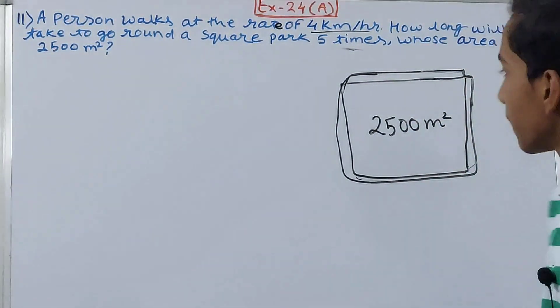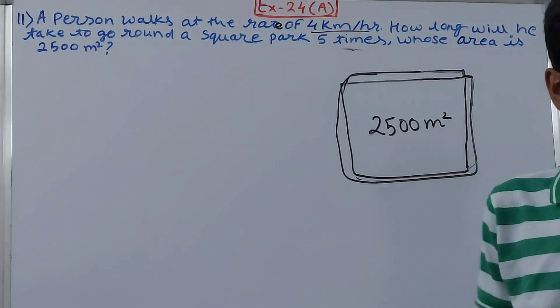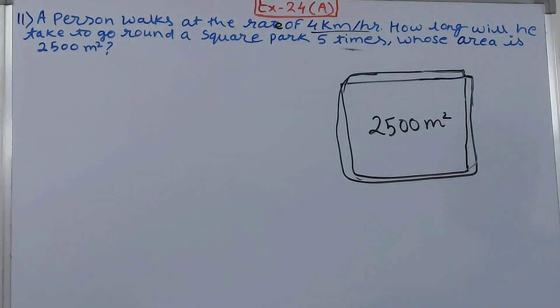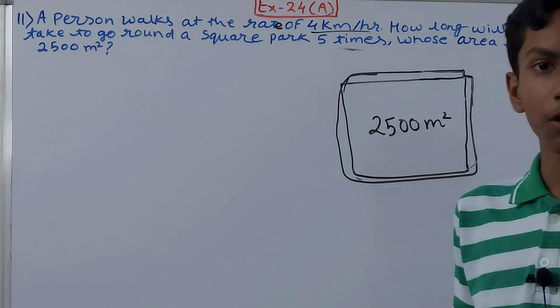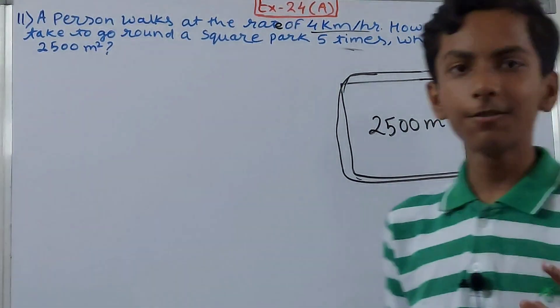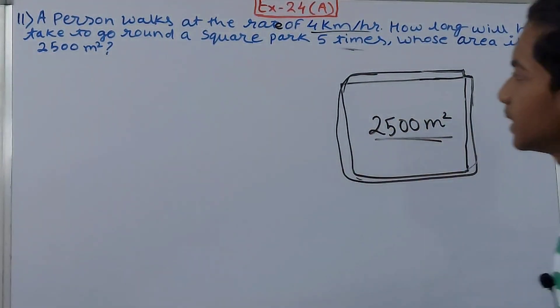We need to know the boundary of the square park, and boundary refers to perimeter. So we have to find the perimeter of the square park. To find the perimeter, we don't know the length of the side, but we can find the side using the area.